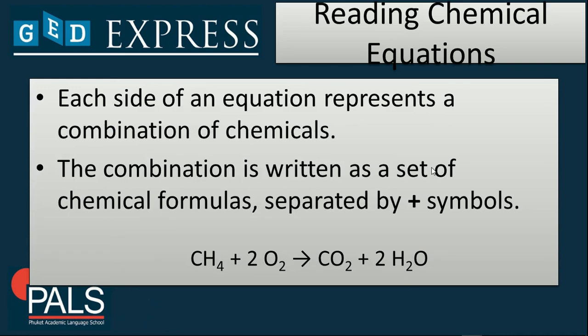In reading chemical equations, each side of an equation represents a combination of chemicals. A combination is written as a set of chemical formulas and is separated by a plus symbol. For example, we have CH4, which is methane, plus two molecules of oxygen.